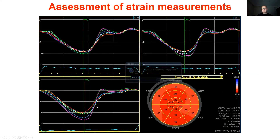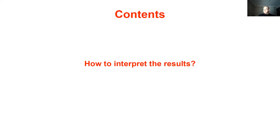After completing all the steps, the software provides strain traces from each apical view and the bullseye plot. Here you can see strain traces of each segment. Usually an 18-segment model is used and the bullseye plot is given, allowing you to document the entire left ventricular deformation in a single plot. The average GLS is also reported. The bullseye plot or strain traces can be changed to show any deformation parameter supported by the vendor.